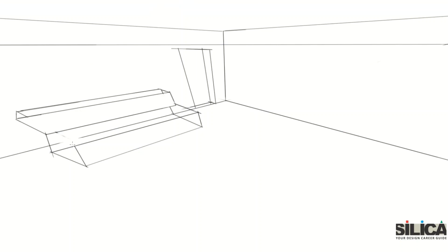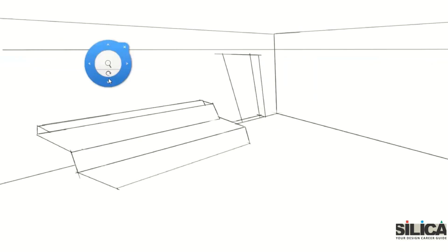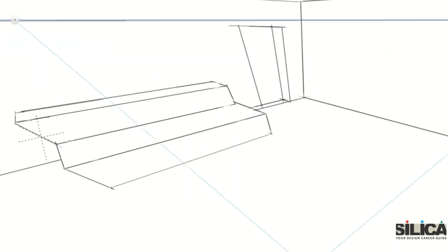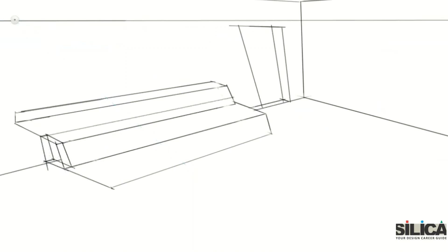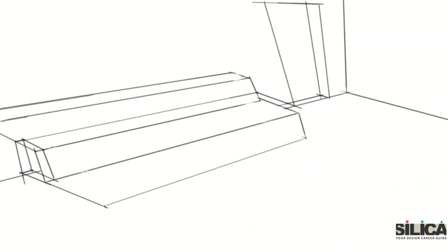Now from the seat part, let's start with the handrest. Similarly, we divide the backrest of the sofa into half, and the height of the handrest will go to the third point. You can see it is a two-dimensional handrest — now I'm giving it a third dimension, adding depth. With the diagonal line merging in vanishing point two, I'm drawing another handrest and joining the height again in vanishing point three. Now I'm making it three-dimensional.